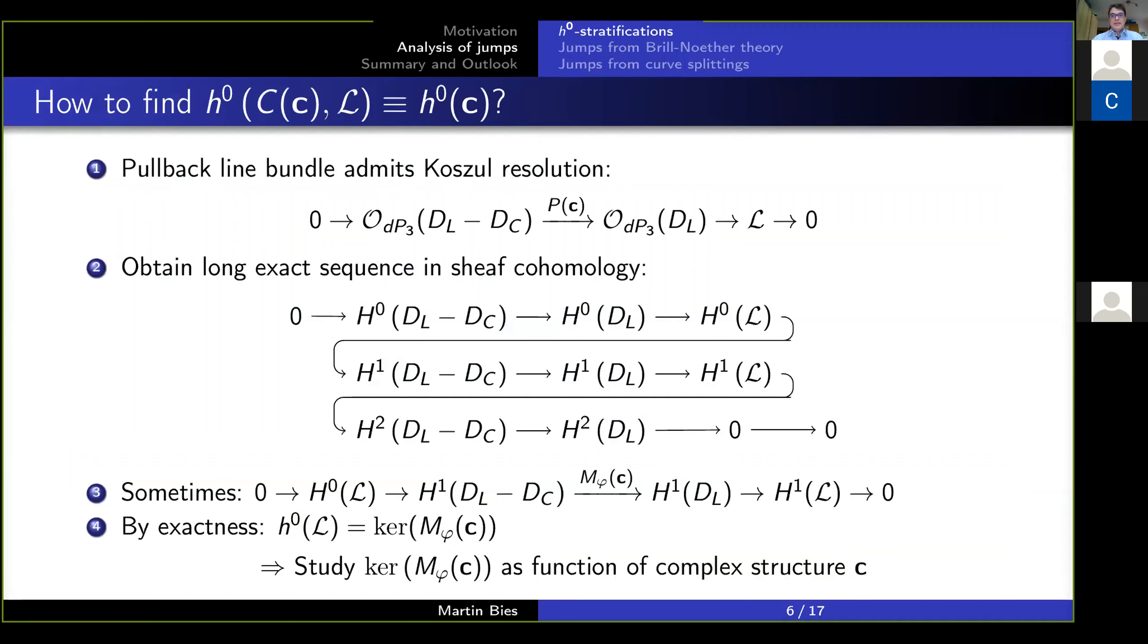The answer is yes, in this setup we can, and we make use of the following facts. Namely, for a pullback line bundle, as we're looking at here, we have a resolution called the Koszul resolution, which turns out to be even a short exact sequence, so just three entries which are non-trivial. And it's a general standing fact in homological algebra that whenever you have such a short exact sequence, you get a long exact sequence in the corresponding cohomology. So here we have a long exact sequence in the sheaf cohomology.